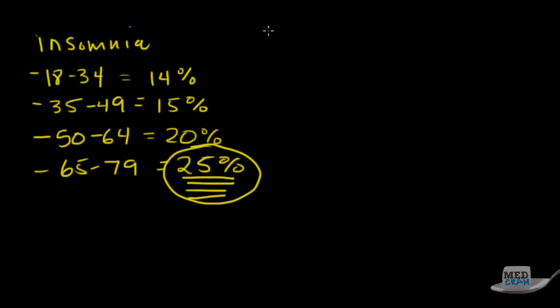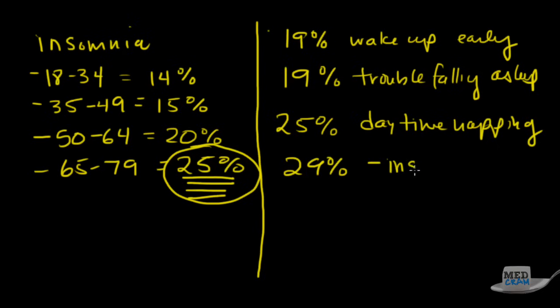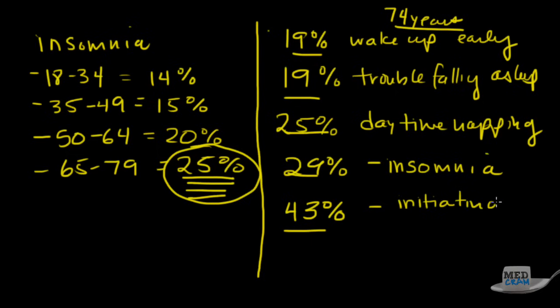Insomnia is a pretty generic term. We could use a number of different words to describe it. About 19% of people wake up too early, another 19% describe trouble falling asleep, 25% have daytime napping, 29% just say they've got insomnia. If you look at both initiating and maintaining sleep, we're looking at 43% of older adults with a mean age of 74 years. 43% have problems with initiation and maintaining both.